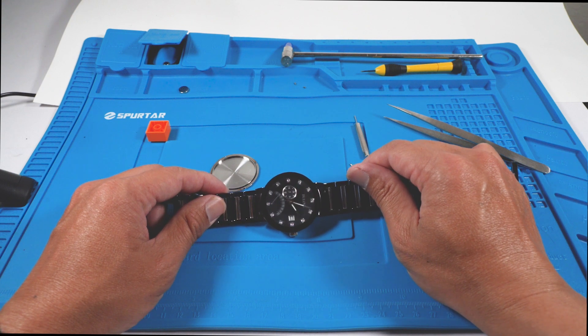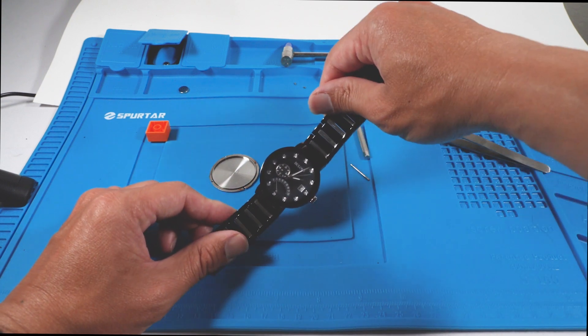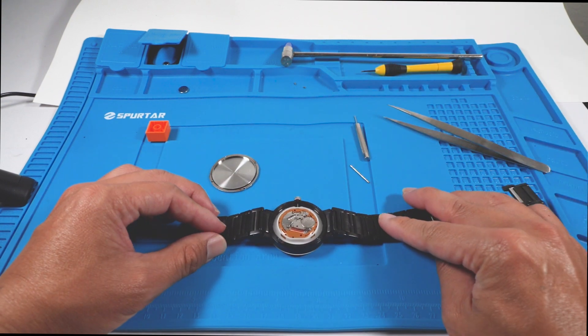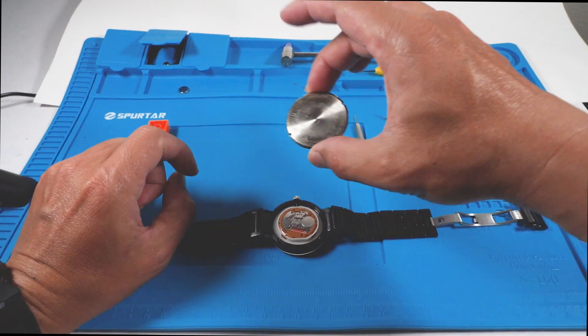Flip the watch over to make sure it's ticking, then put everything back the exact opposite way you removed it.